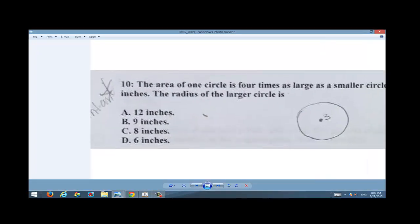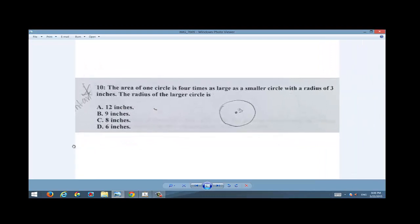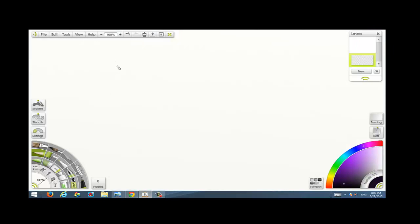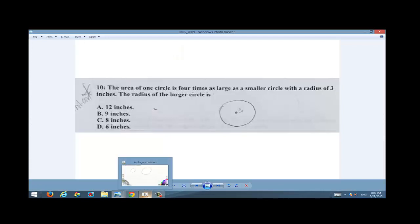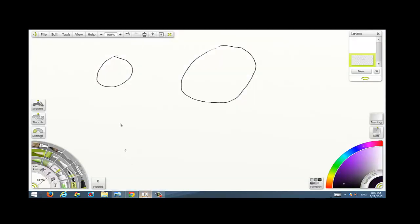Okay, they're telling me that the area of one circle is four times as large as a smaller circle. So let's just draw a small circle, not that small, a little bit bigger. That circle and a bigger circle, and that's supposed to look like a circle. Okay, they're telling me that the area of one circle is four times as large as the smaller circle.